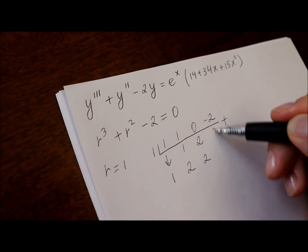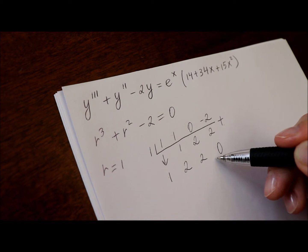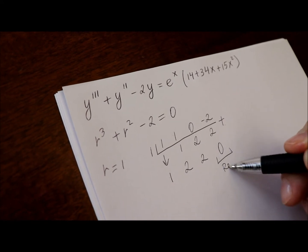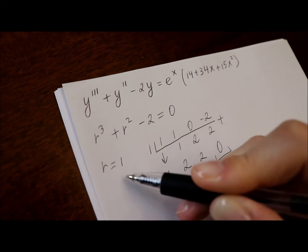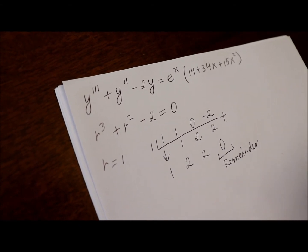One more time, 1 times 2 is 2, and add 0. We expected this to be a 0, this is our remainder, since r equals 1 was a solution and the polynomial is divisible by r minus 1.